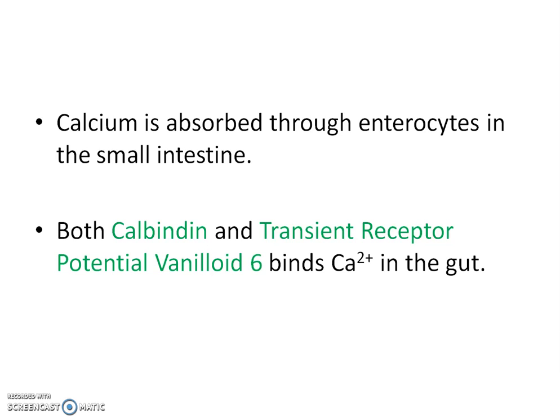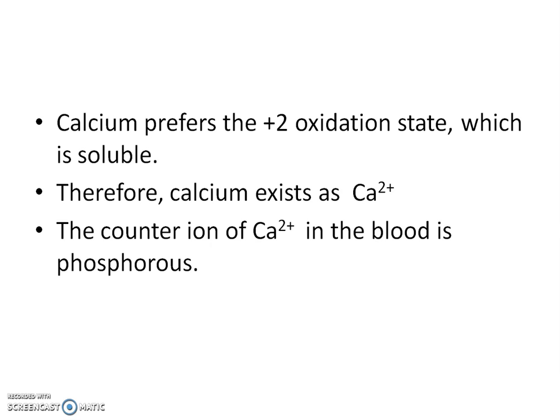Calcium is absorbed through enterocytes in the small intestine. Both calbindin and transient receptor potential valenoid 6 bind calcium 2+ in the gut. Calcium prefers to be in the +2 oxidation state, which is soluble. Therefore, calcium exists as calcium 2+.